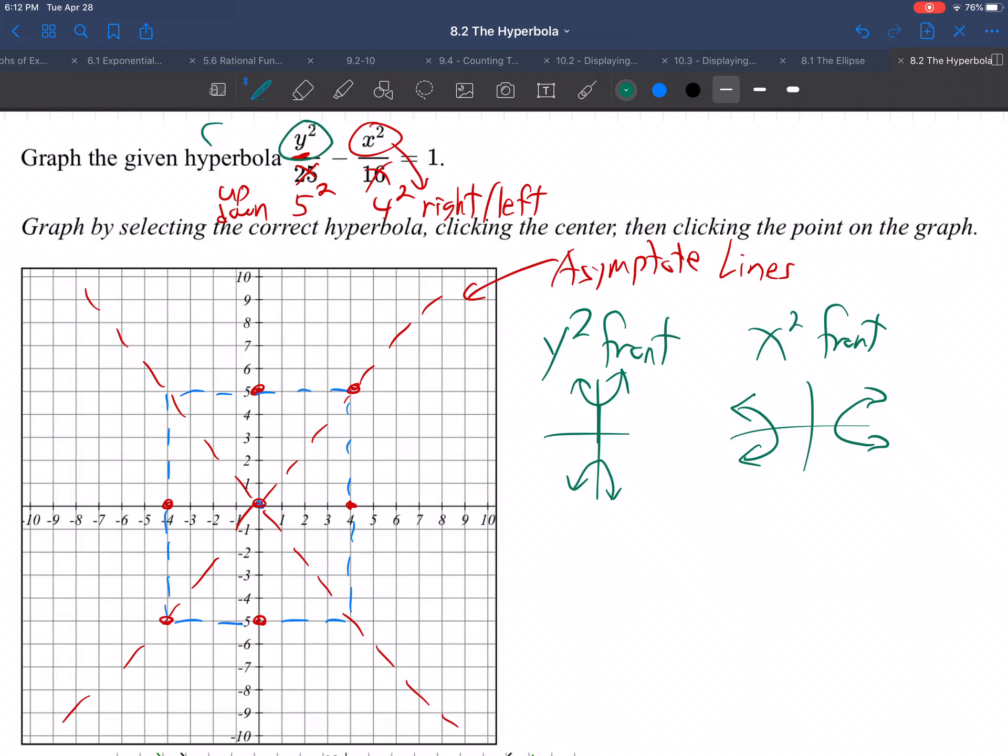In this case, we have y squared in the front. So if y is in the front, the branches go up and down. So where exactly do they go up and down? Starting from the middle of the box, one branch will go up like that and the other one starting in the middle goes down. And they get closer and closer to those guidelines forever. Those guidelines guide the branches, guide the graph.